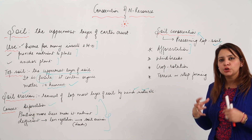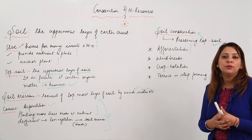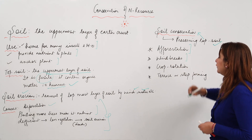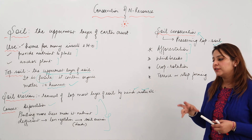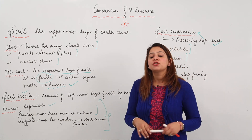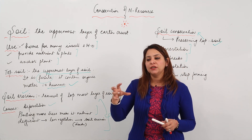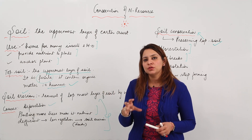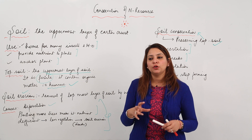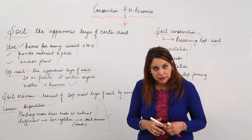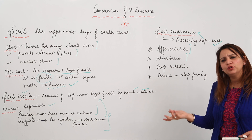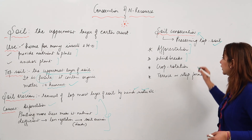Afforestation means planting more trees. When you plant more trees, they hold the soil so it won't be carried away by wind or water. Secondly, we can use windbreakers and shelterbelt breakers — after harvesting when your land becomes free, try to plant trees and small shrubs in rows of one or two to hold the soil.